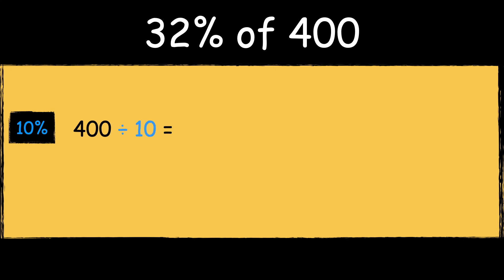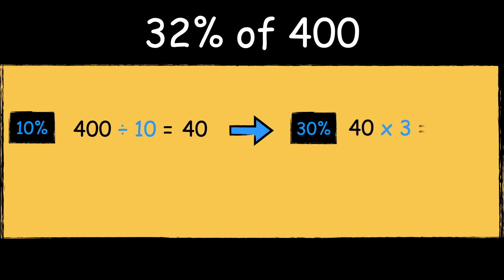Here's example one: 32% of 400. First, to work out 10% of a number we divide the number by 10. 400 divided by 10 is 40. Then we can multiply the answer by 3 to find 30%. 40 times 3 is 120.